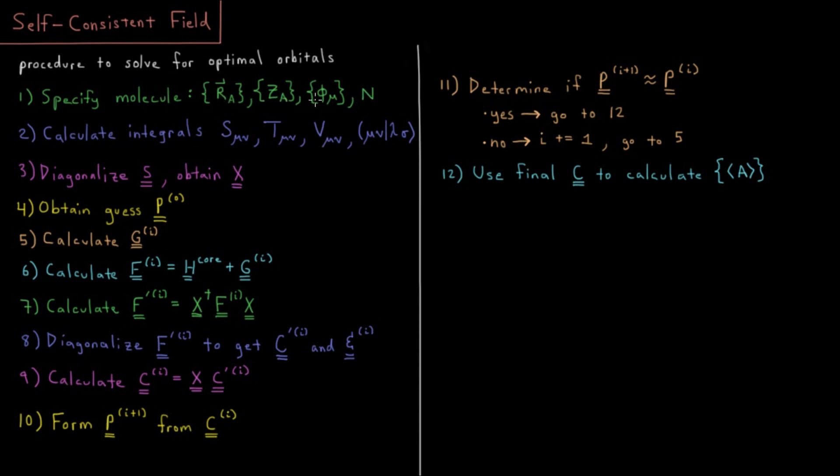So that is our molecule. Basically, what nuclei do you have, where are they, how many electrons you got, and what are your basis functions? That's all you need to do to specify a molecule. And then for that given molecule, there will exist a set of orbitals which have the minimum possible Hartree-Fock energy.